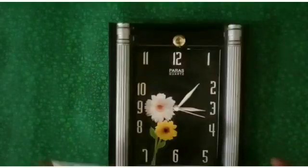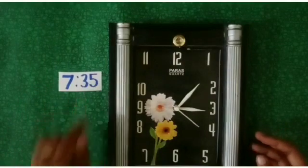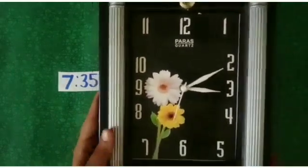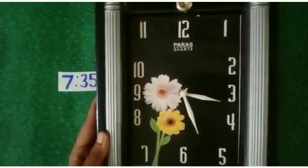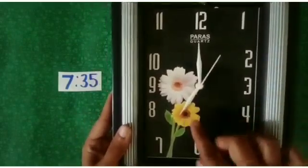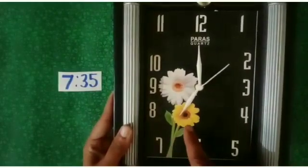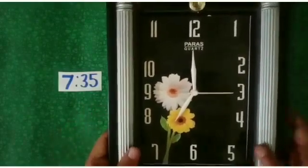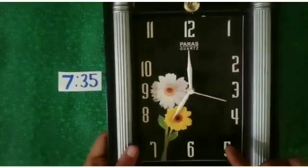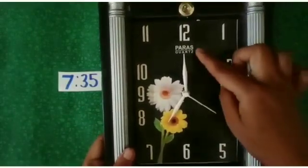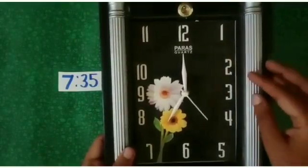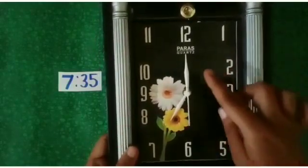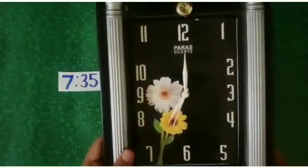Students, if we want to show 7:35 on clock, then first of all, we'll move our hand to 7 and students, see. Our hand is pointing to 7 but we have 35 minutes also. So let us show 35 minutes on clock. Students, how many minutes are there between 12 to 1? Yes, 5 minutes. In the same way, we will add 5 minutes every time till we reach 35 minutes. We will move minute hand in increasing order.